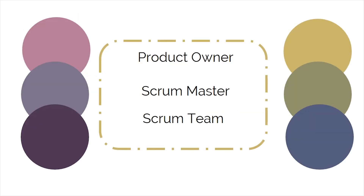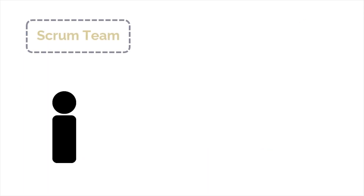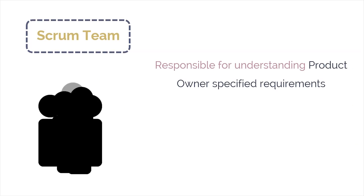Finally, it's the turn of the Scrum team — they actually do the work. The Scrum team is the group of people responsible for understanding the requirements specified by the product owner and creating the deliverables of the project. Considering the earlier example, the software development team, either with newly recruited experts or newly acquired training, will proceed in accordance with the requirements set by the product owner.